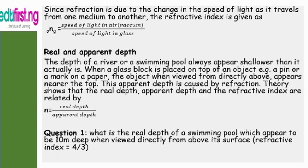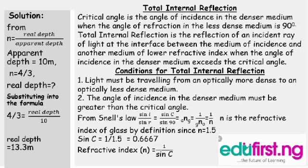Theory shows that real depth, apparent depth, and refractive index are related by: refractive index equals real depth divided by apparent depth. Question one: what is the real depth of a swimming pool which appears to be 10 meters deep when viewed directly from above its surface, given that the refractive index is 4 over 3? Solution: substituting into the formula, 4 over 3 equals real depth over 10. Solving for real depth, the final answer is 13.3 meters.